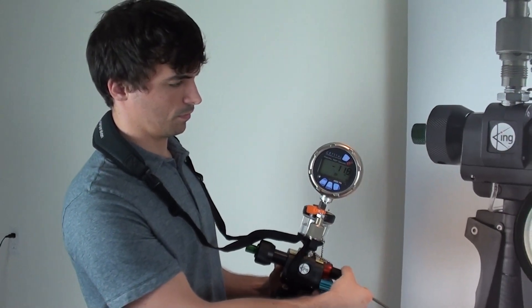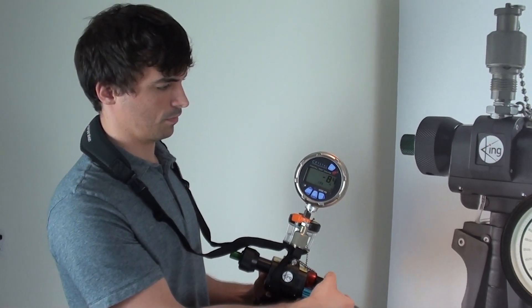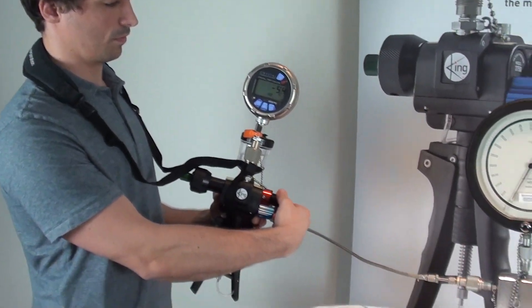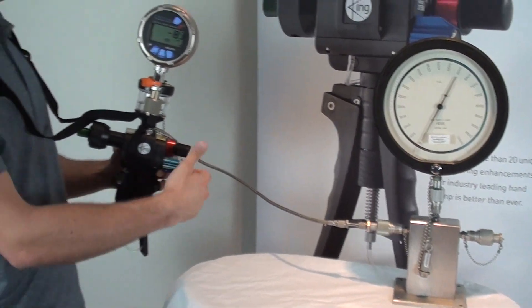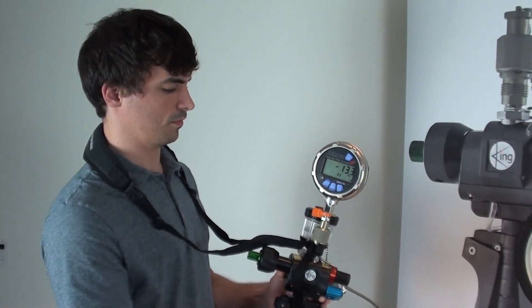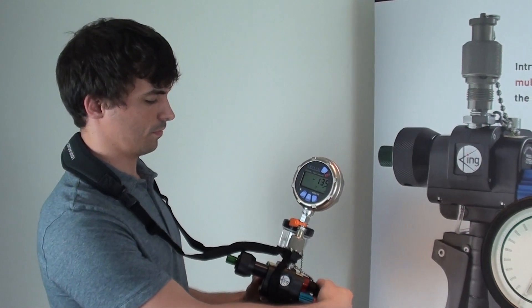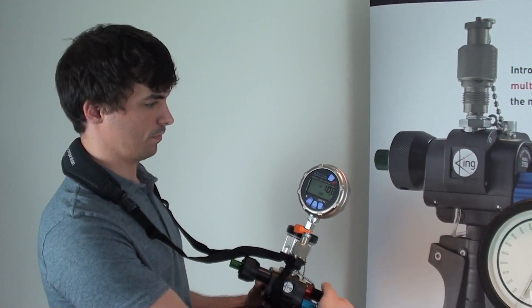So once we've generated a pretty sufficient vacuum, we're going to open up the vent valve. And what this will do is draw water into our system. The reason why we're drawing water into the system is so that we don't get issues with compression of any air that's in the system when we generate a high pressure.